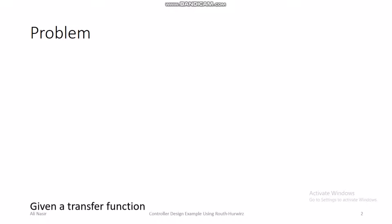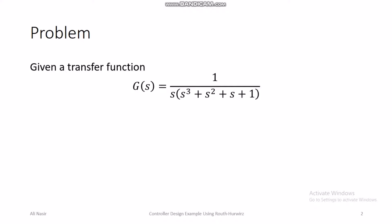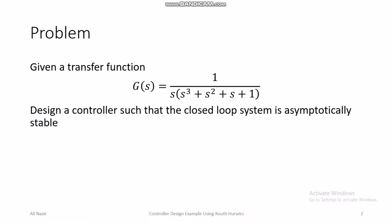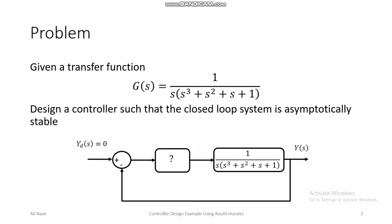In this example we shall be looking at a transfer function which is 1 over s times (s³ + s² + s + 1). This is a fourth order transfer function and we wish to design the controller that can render the closed loop system with this transfer function to be asymptotically stable. For stability, the desired value of output is zero — stability means we want to drive the output to zero value.